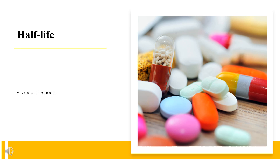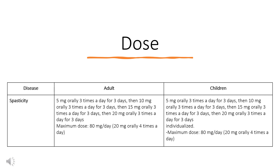Half-life: About 2 to 6 hours. For spasticity, the initial dose and the following gradually increasing dosage regimen is suggested, but should be adjusted to suit individual patient requirements: 5 mg orally 3 times a day for 3 days, then 10 mg orally 3 times a day for 3 days, then 15 mg orally 3 times a day for 3 days, then 20 mg orally 3 times a day for 3 days. Maintenance dose should be individualized. Maximum dose: 80 mg per day (20 mg orally 4 times a day).